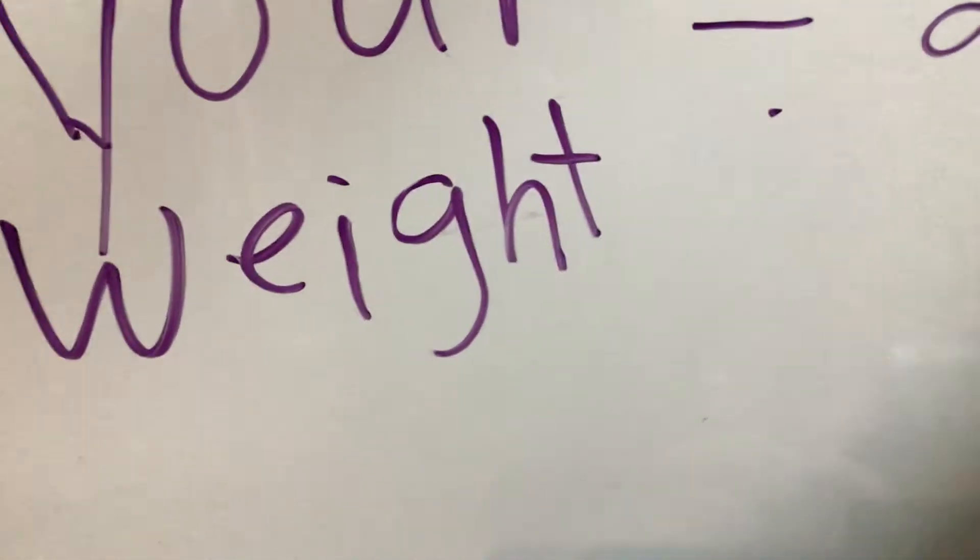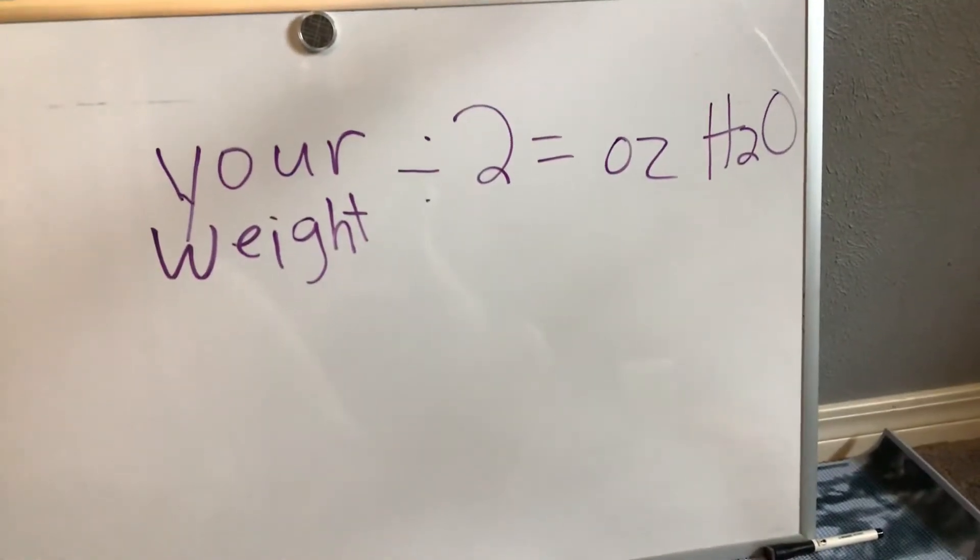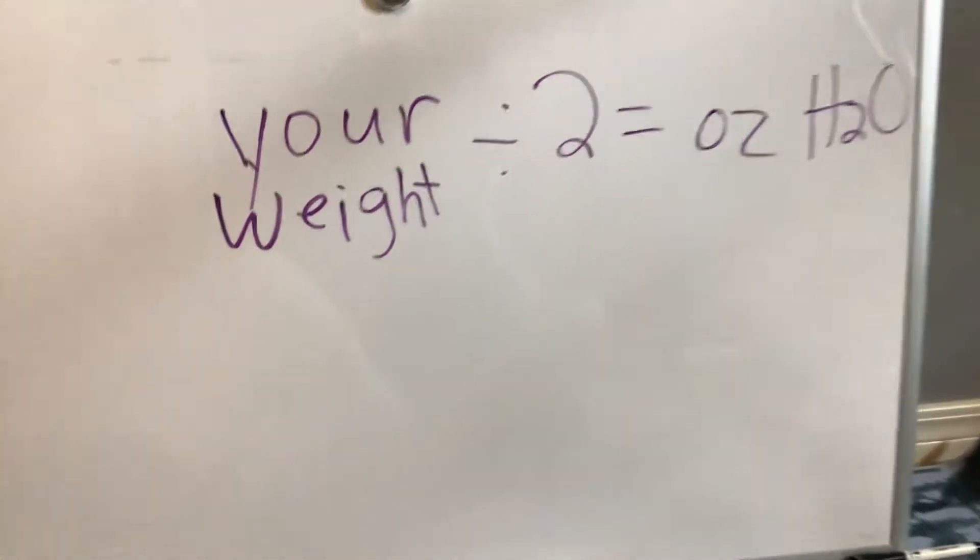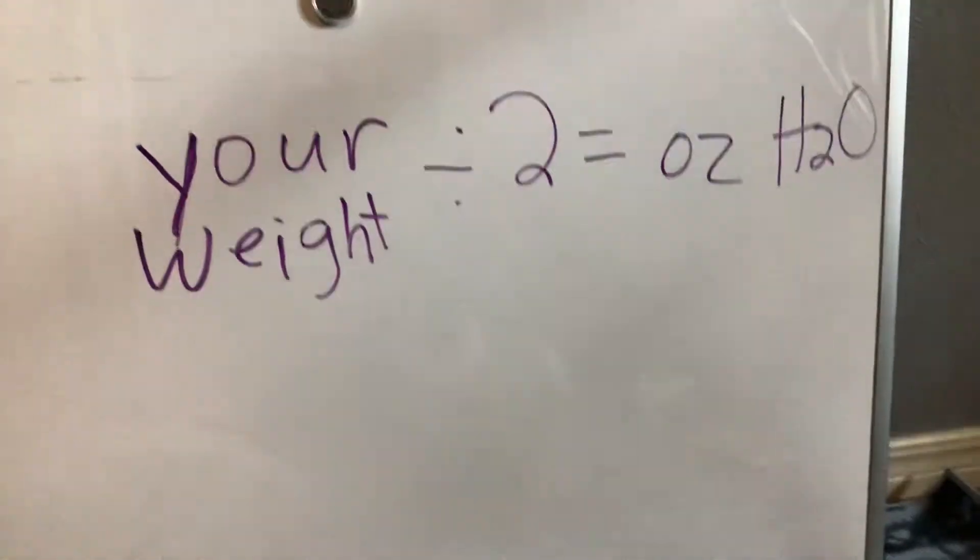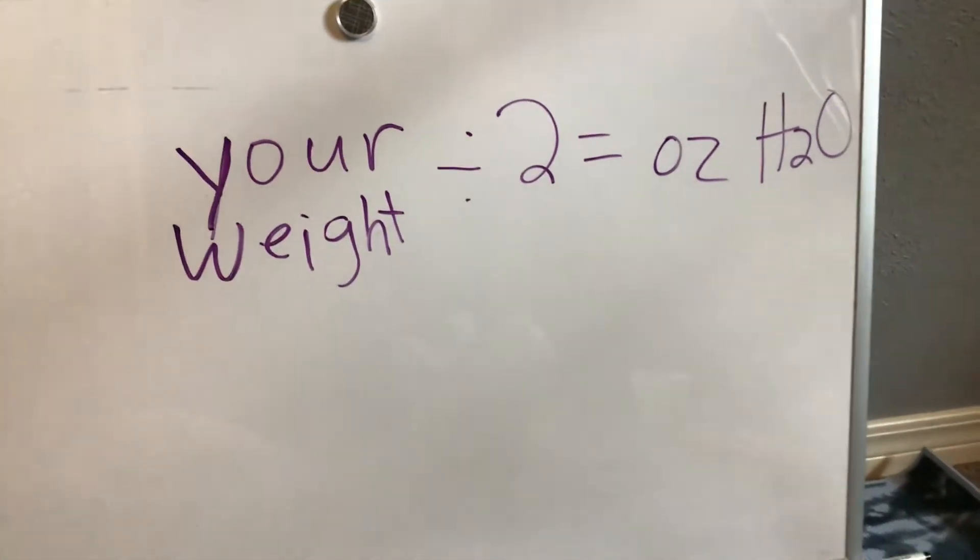So your weight divided by two equals how many ounces of water you should drink per day. Your weight ÷ 2 = oz of water per day. If you weigh 220 pounds and you divide that by two...